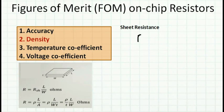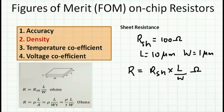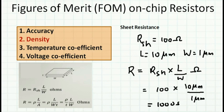Suppose the sheet resistance is 100 ohms per square. To find the resistance of a material with length 10 micrometers and width 1 micrometer, I use the formula: R = R_sheet × L / W. That gives 100 × 10 micrometer / 1 micrometer = 1000 ohms, or 1 kilo ohm. This is how we find the resistance of a material from its sheet resistance.